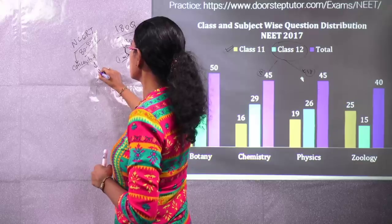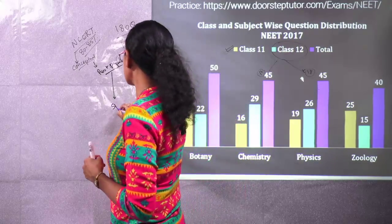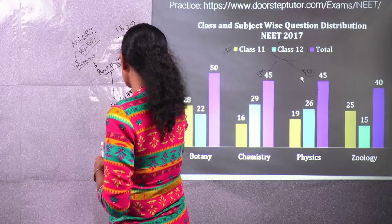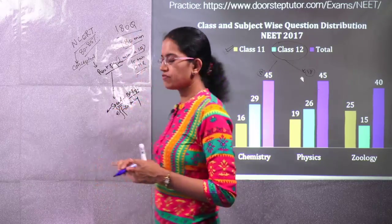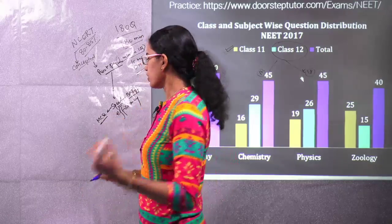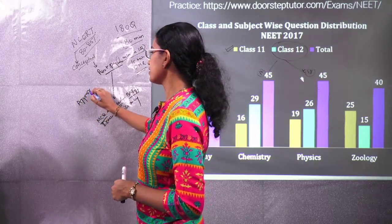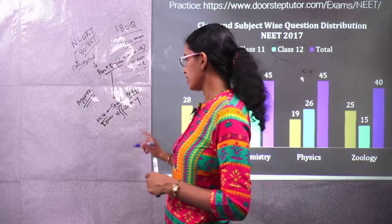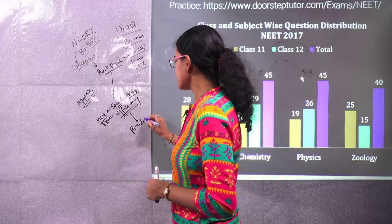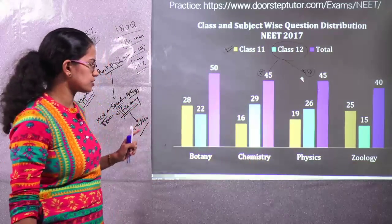Besides NCERT, we recommend solving past papers. Solving past papers helps you test two important things: speed and efficiency. Speed won't be a problem for biology since most questions are direct. However, you require speed specifically for physics — solving MCQ questions in physics is much different from board exams, where you find the exact answer. Here, you work with approximations and still land on the correct choice. Efficiency can be enhanced only by practice, so practice as much as you can — both objective and subjective questions — which will give you greater understanding of the major concepts.